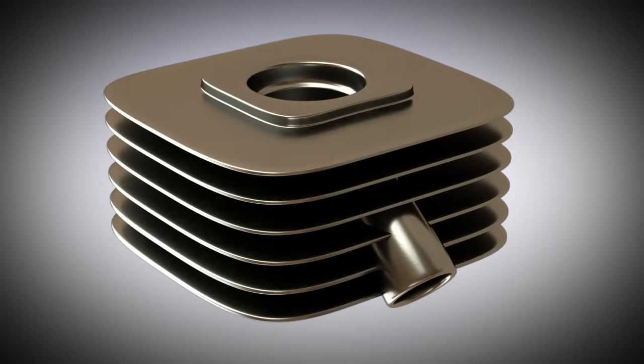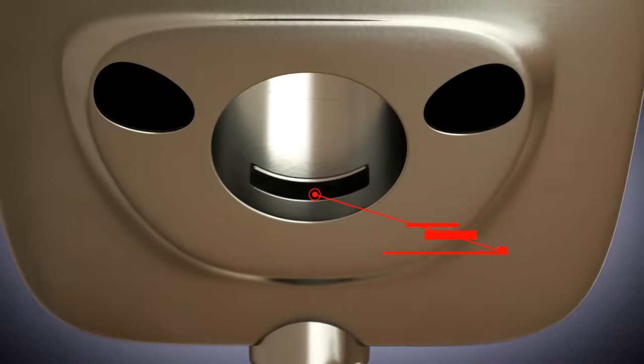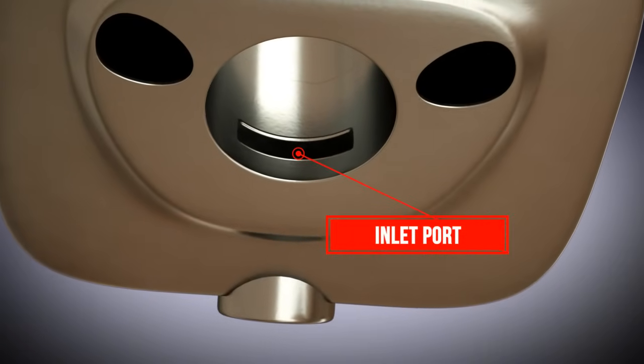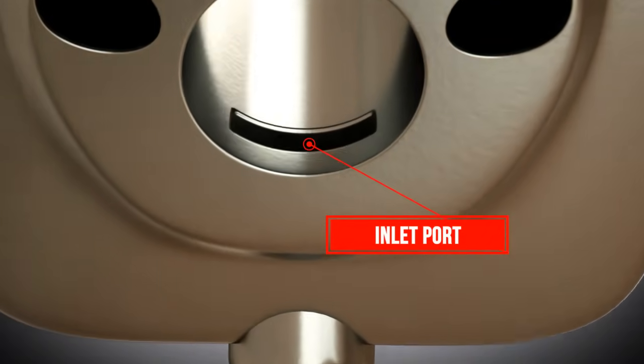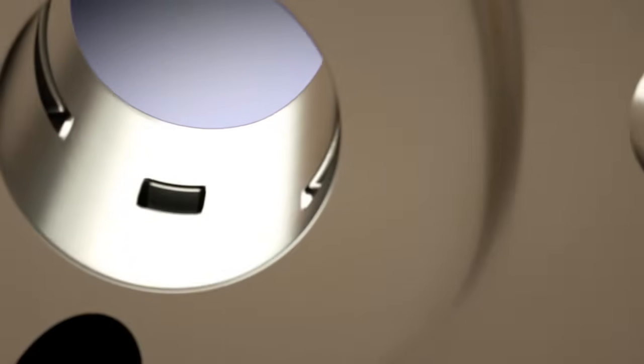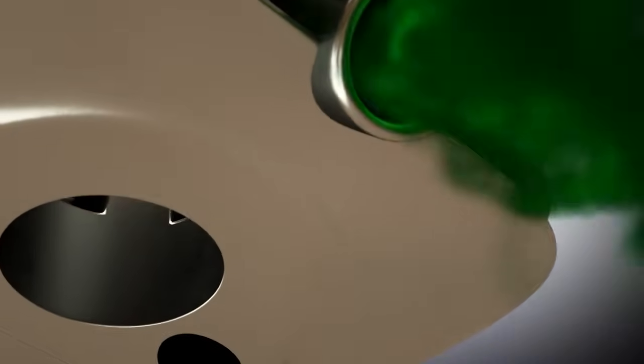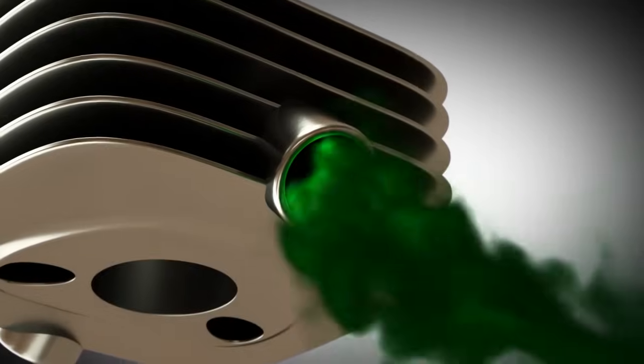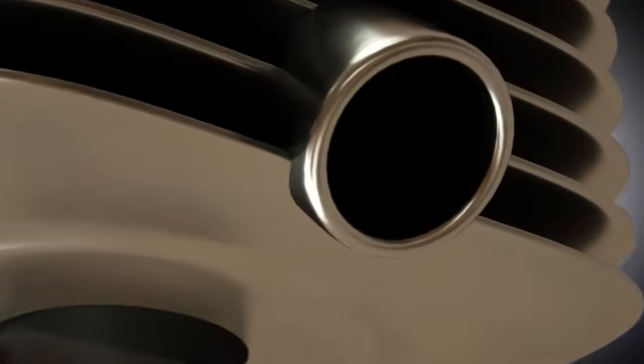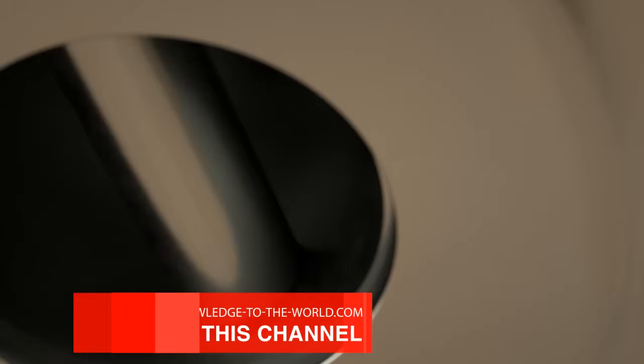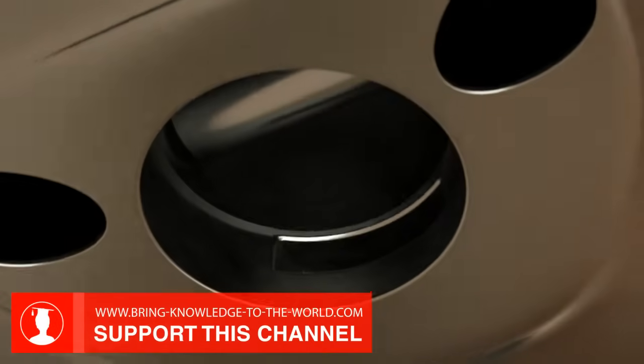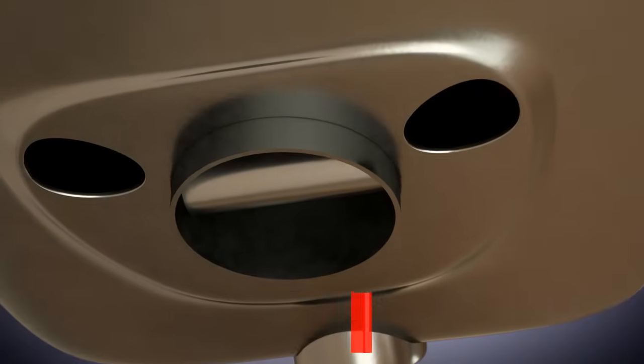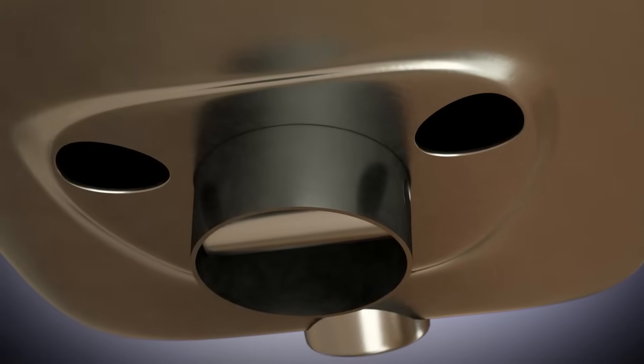For the sake of simplicity, the crankcase and housing cover are not shown. There are various ports in the cylinder, including an inlet port. The fuel-air mixture is fed to the inlet port via the carburetor. The piston, moving up and down in the cylinder, opens and closes the inlet port consistently.